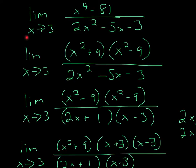Okay, so for this problem, it's the limit as x approaches 3, x to the 4th power, minus 81, over 2x squared, minus 5x, minus 3.